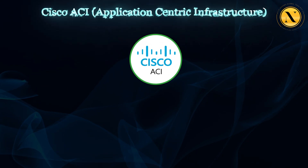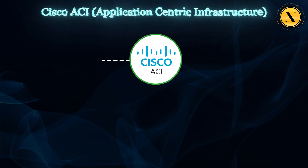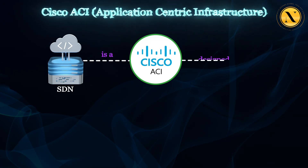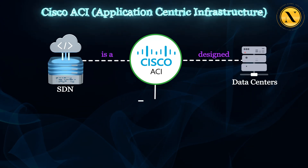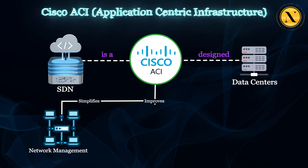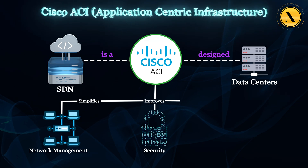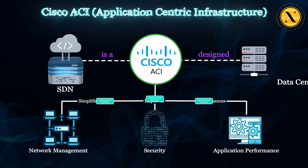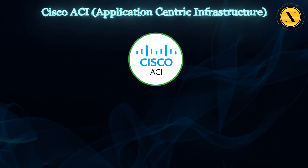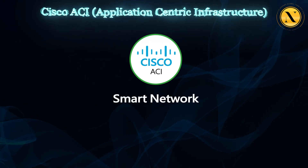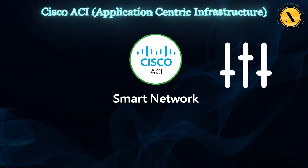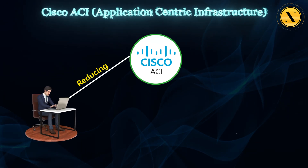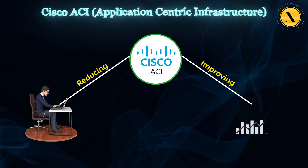Cisco ACI, application-centric infrastructure, is a software-defined networking solution designed for data centers. It simplifies network management, improves security, and enhances application performance by using automation and centralized control. Think of ACI as a smart network that automatically adjusts based on the needs of the applications, reducing manual work and improving efficiency.